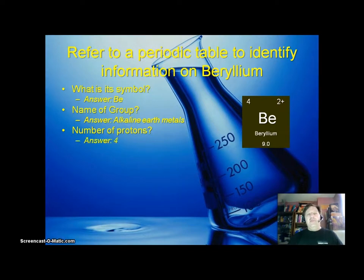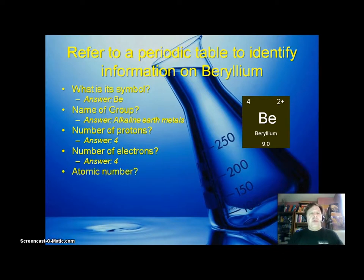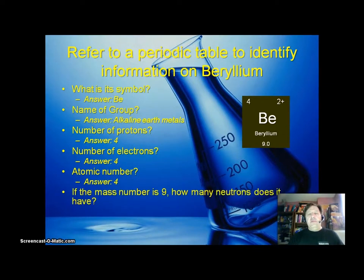Well, it has 4 protons and that's because the atomic number is 4. What's the number of electrons then? Well, it ought to be 4 because for a periodic table you assume a neutral charge. And what's the atomic number? Well, that's also 4. And if the mass number is 9, which it is, how many neutrons does it have? Well, that's 9 minus 4, which is 5.